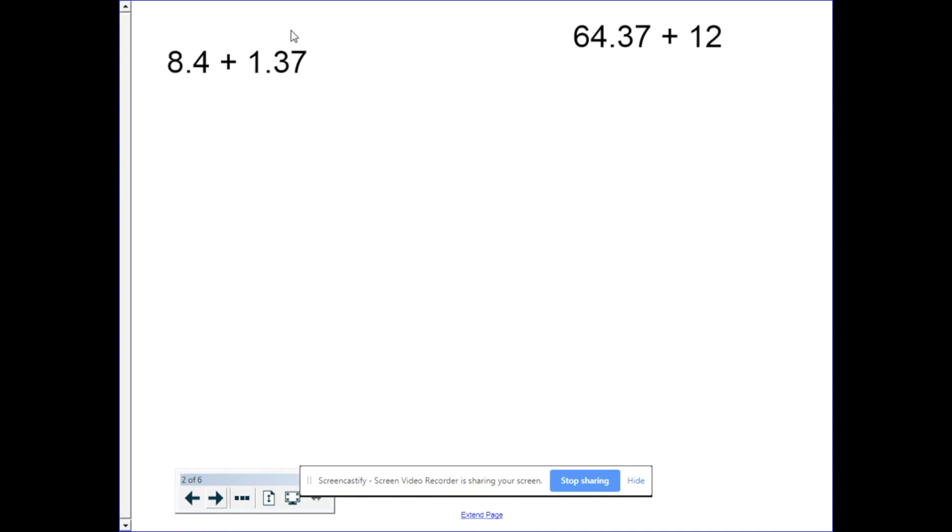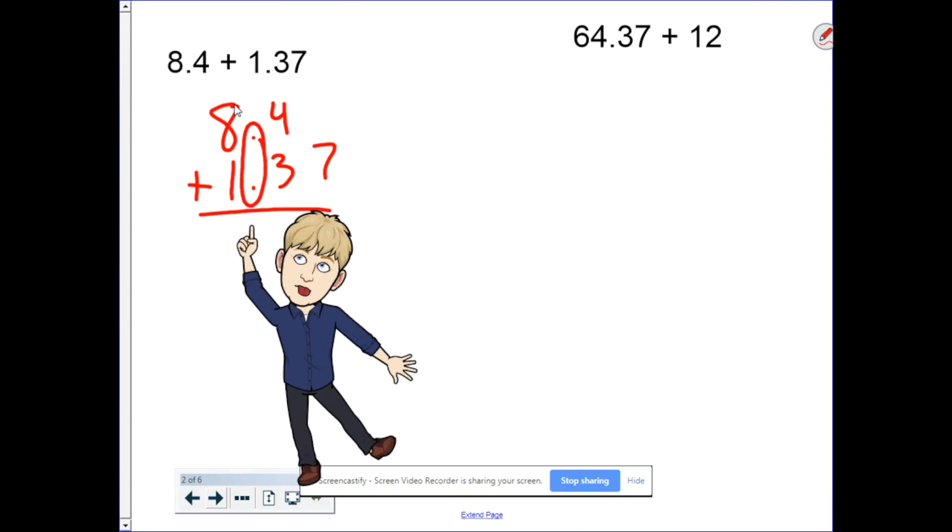Okay, let's do some examples. First, I need to line them up by the decimal point. So I have 8.4 plus 1.37. Notice how my decimal points are lined up. That allows all the place values to be lined up correctly.